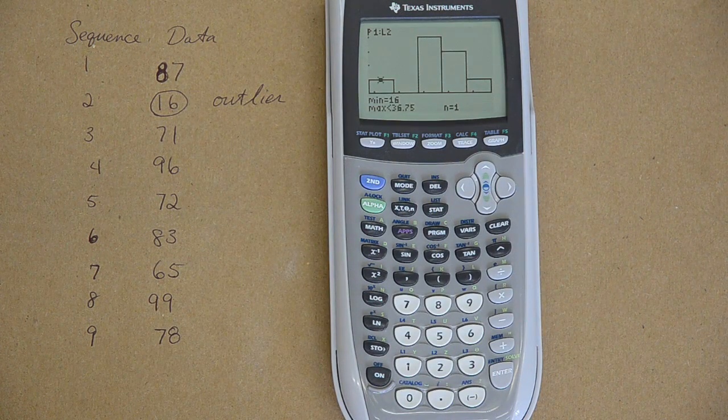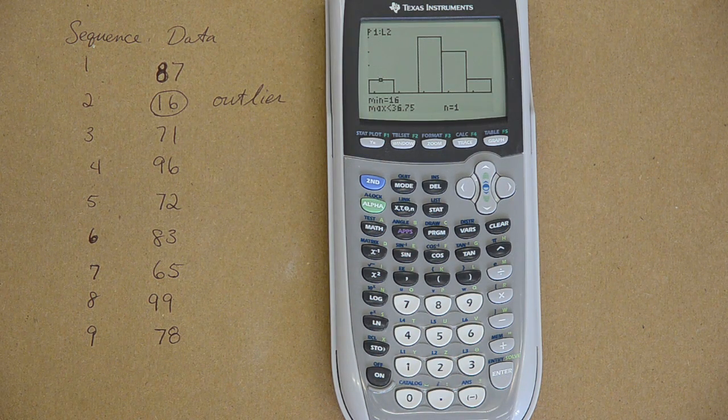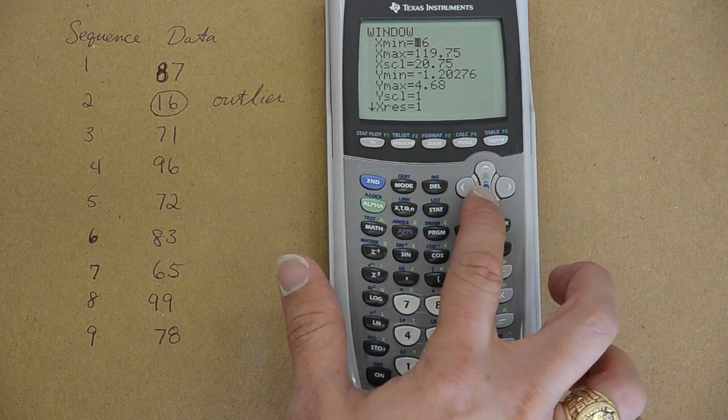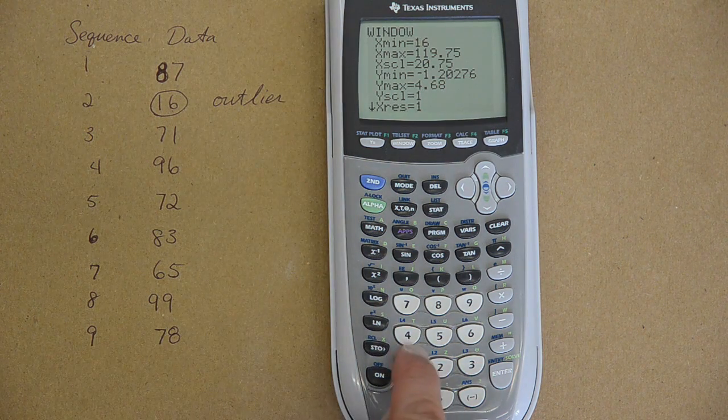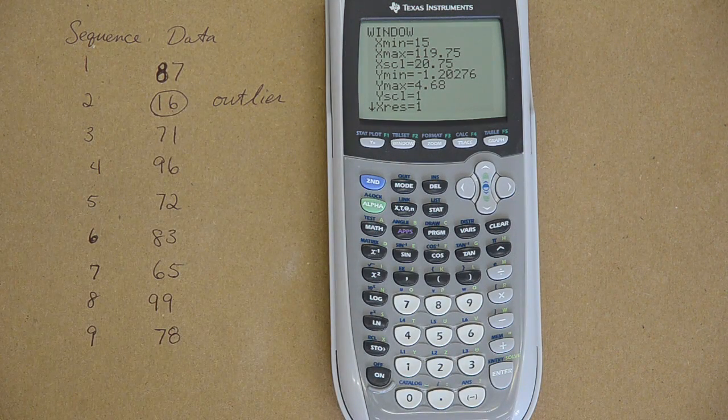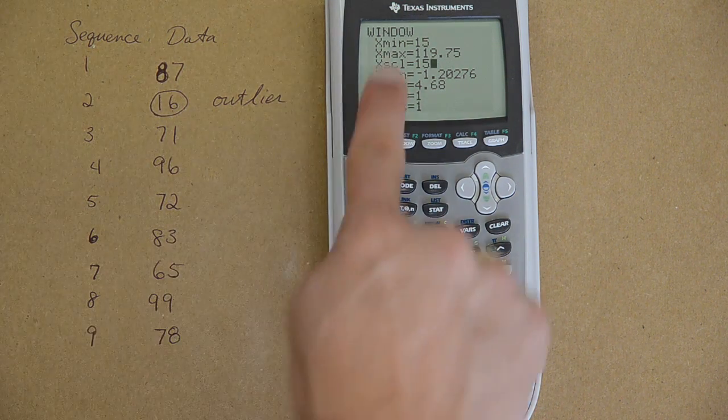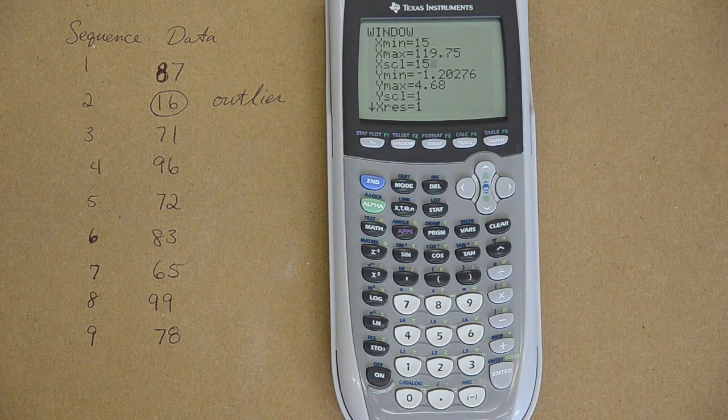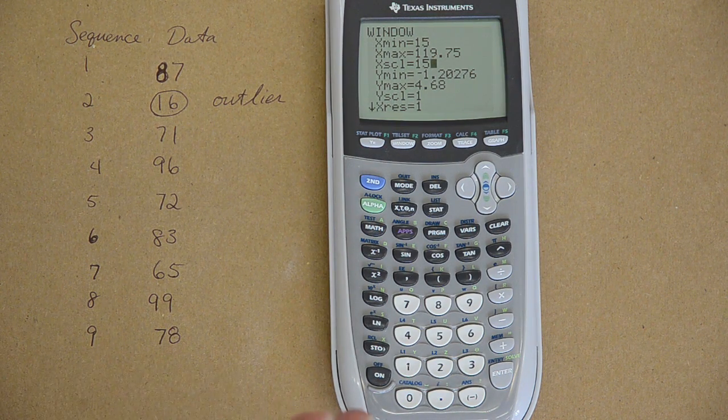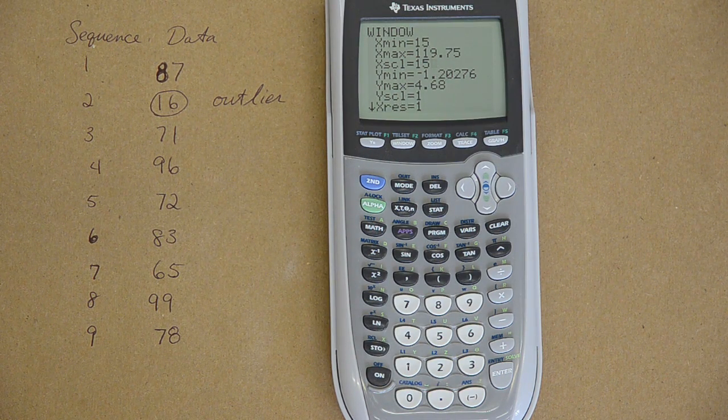What we normally do when we are making histograms with a graphing calculator is we have to go back and manually change the scale ourselves. You do that by hitting window and scrolling down, the xmin is a reasonable number, our minimum value is 16. I am going to change that to 15. Our x scale is a decimal when none of our data has decimals, that doesn't make much sense. So I am going to change that to 15. Instead of doing zoom 9, I am just going to hit graph.